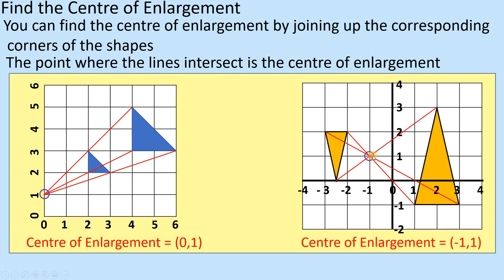Of course, we're not asked to describe the enlargement here, because we haven't been told whether it's going from this one to this one, or this one to this one — and that makes a difference. If I'm going from this one to this one, it's got a scale factor of minus two. If I'm going from this one to this one, that's going to have a scale factor of minus a half. This lesson is just about finding the centre by drawing those lines.